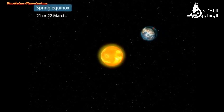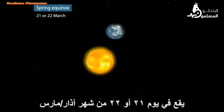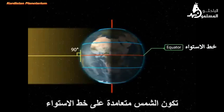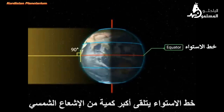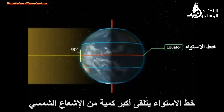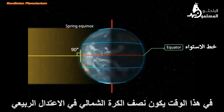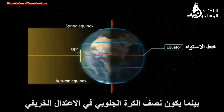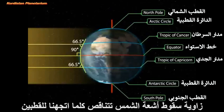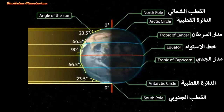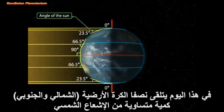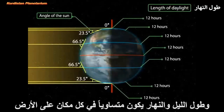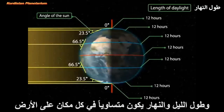Spring equinox: on the 21st or 22nd of March, the overhead Sun is over the equator. The equator receives the largest amount of solar radiation. At this time, the northern hemisphere is in the spring equinox, while the southern hemisphere is in the autumn equinox. The angle of the Sun decreases towards the poles. On this day, the two hemispheres receive a similar amount of solar radiation, and the length of day and night is the same at all places on Earth.